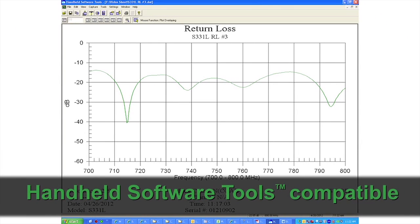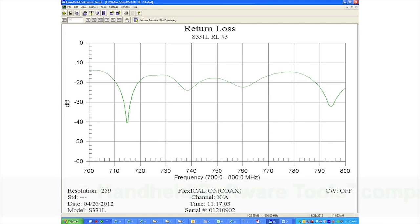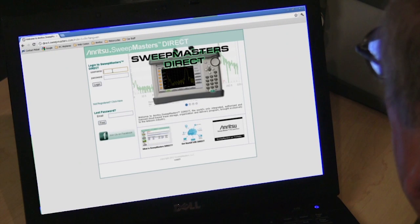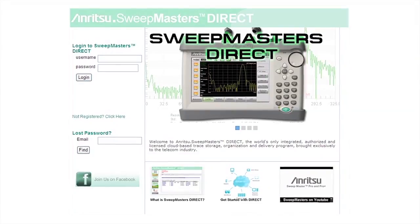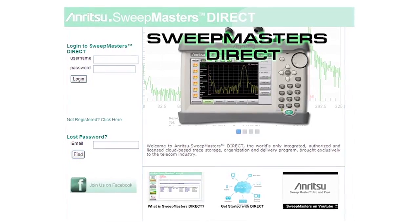The SightMaster S331L is backwards compatible with Enritsu's handheld software tools. Plus, available with every S331L is Sweepmasters Direct, an easy-to-use online storage and delivery system for your cable and antenna analyzer test results. Sweepmasters Direct lets you capture, upload and deliver traces using a cloud-based storage system.